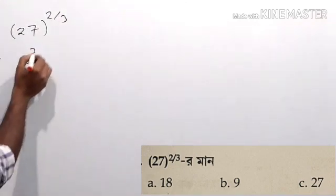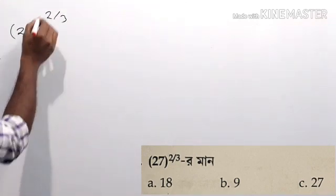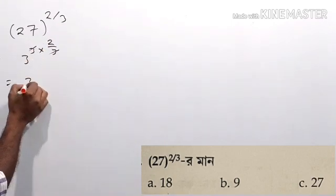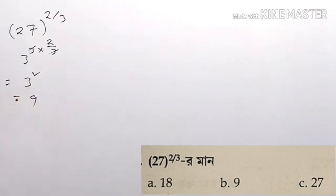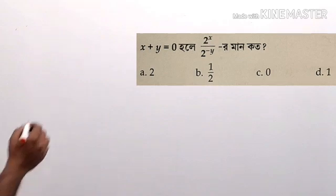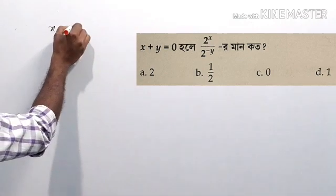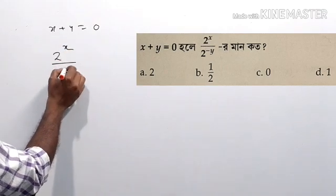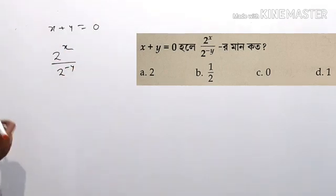2 minus 3 is equal to 3, and 3 minus 3 is equal to 9. x plus y is equal to 0. 2 to the power x divided by 2 to the power minus y. x plus y equal to 0, x plus y equal to 0. x is 2 to the power x by 2 to the power minus y.